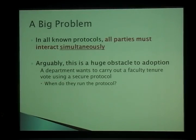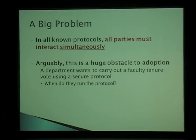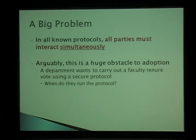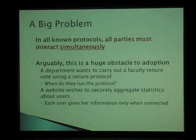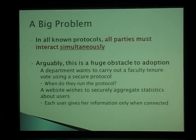Everybody has to come together and give their inputs at the same time. Consider a simple problem with a closed group — a vote for faculty tenure. Since there's a lot of politics, we want a secure protocol. But if anyone's tried to schedule three faculty members in a meeting, it takes about two months. Getting 40 faculty members together online at the same time, when half are overseas or at conferences, is a very big problem in practice. It gets even worse for a website computing visitor demographics, because each party comes, does whatever it does, and goes — it won't hang around until 5,000 others get together to run some joint protocol.